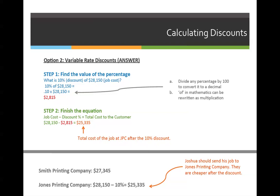We need to go back and go through step one and step two in order to calculate Jones Printing Company's cost. They're offering a 10% discount, and Joshua can take advantage of it because he's never used them before. So we need to rewrite the problem as: what is 10% of $28,150? That will give us the total discount amount.